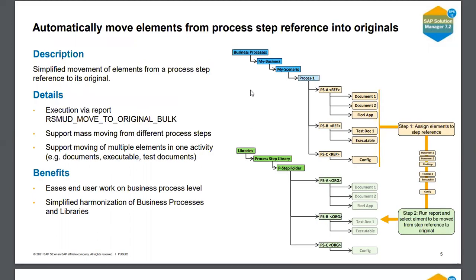In process management, there are some changes visible in the screens I'm showing. SAP has released one report — RSM_UD_MOVE_TO_ORIGINAL_BULK — as an innovation. Using this report, elements from one process step can be moved directly back to their original location. The types of elements you can move include documents, executables, and test documents.